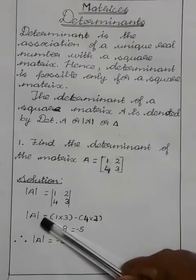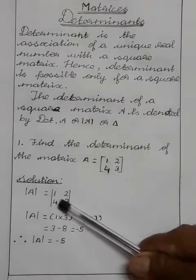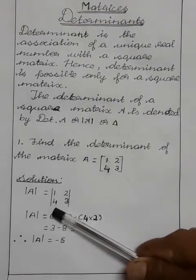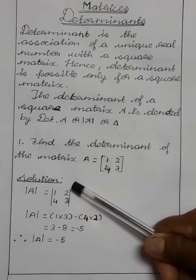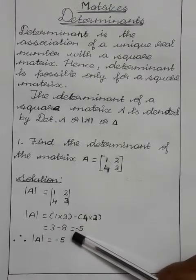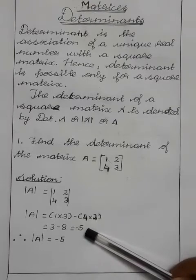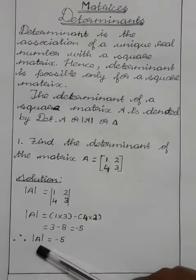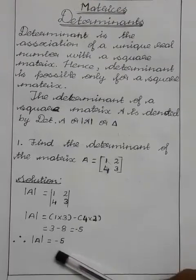Determinant of A matrix is equal to 1 into 3 minus 4 into 2, is equal to 3 minus 8 is equal to minus 5. Therefore, determinant of A matrix is equal to minus 5.